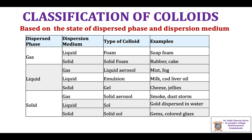When the dispersed phase is gas and the dispersion medium is a liquid, that type of colloid is called foam. The best example is soap foam. When gas is dispersed in a solid dispersion medium, it is called solid foam. Rubber, cake, and pumice stone are examples of this type of colloid.